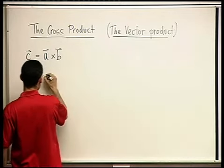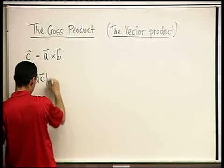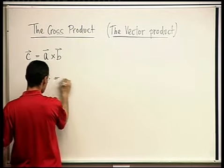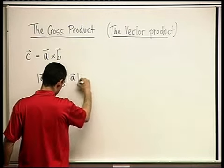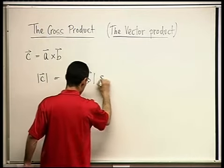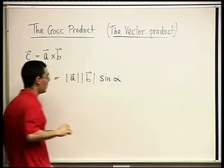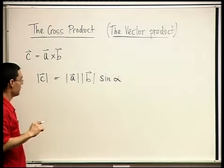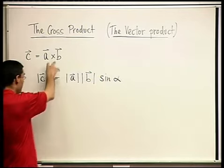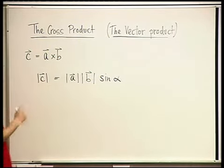By definition, the length of C — the length of A cross B — is the length of A times the length of B times the sine of the angle between them, which we'll call alpha. That's the length of C. That's not the result, because C is not a scalar; C is a vector. That's just its length.